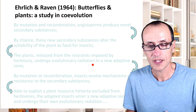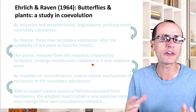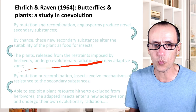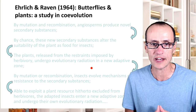This is kind of where the magic happens. Ehrlich and Raven didn't specify very much how this was supposed to happen, and there's been a lot of debate in the scientific literature about what the mechanism for causing these evolutionary radiations actually is. But let's leave that aside for now.